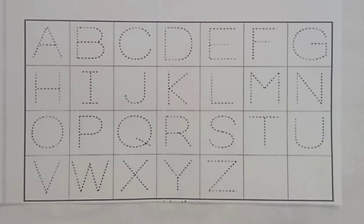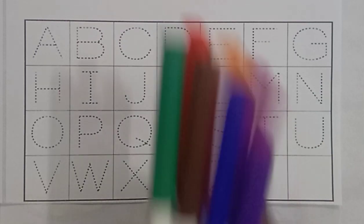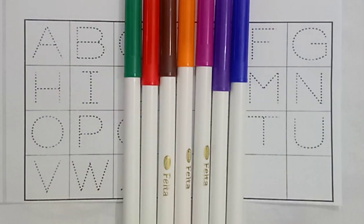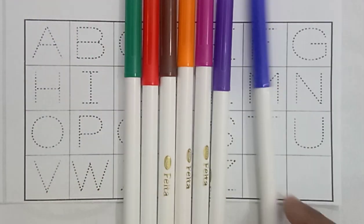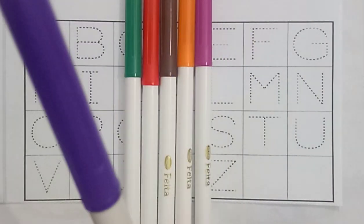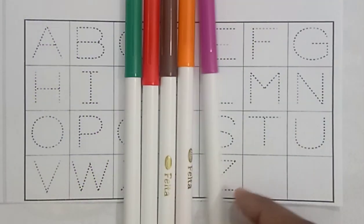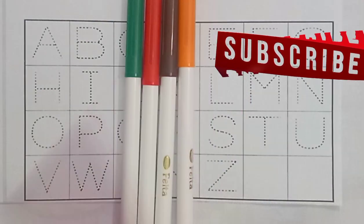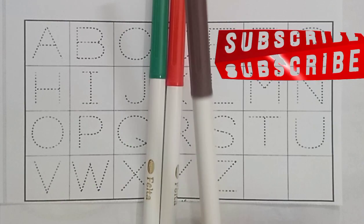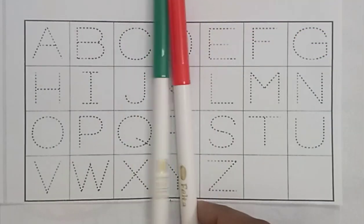Hello kids, welcome to my channel. Today you'll learn color names and alphabets. First, color names: blue color, purple color, red color, orange color, brown color, green color.